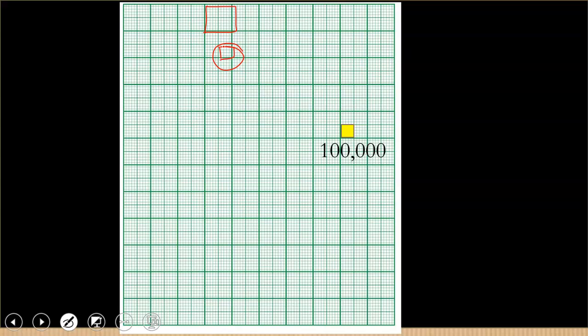Now we want to use the first small, or maybe any of the small squares like this one, to represent 100,000.